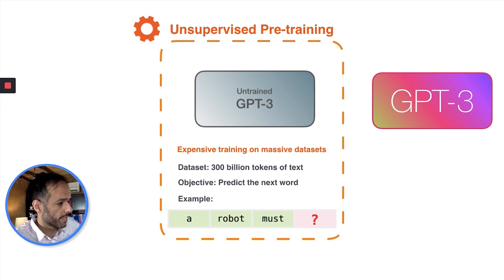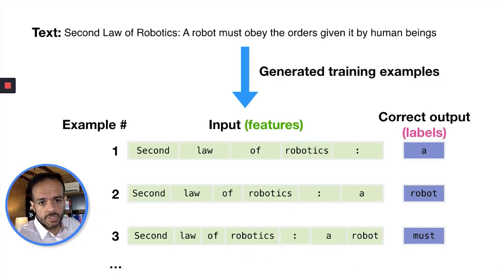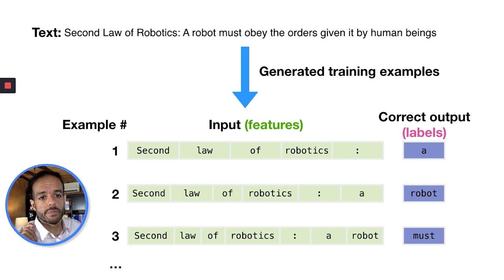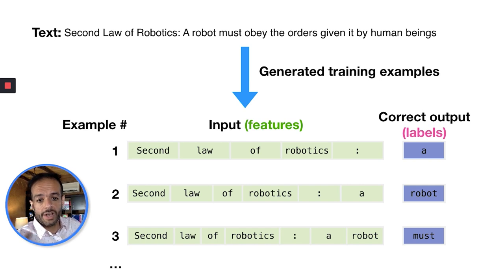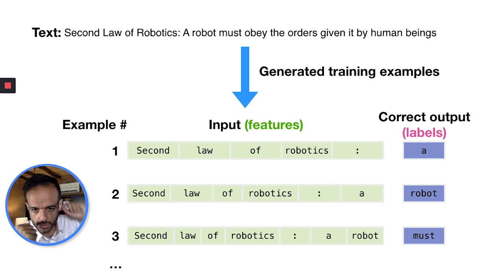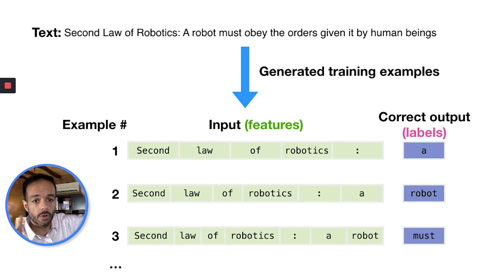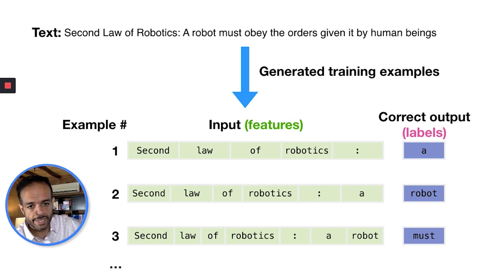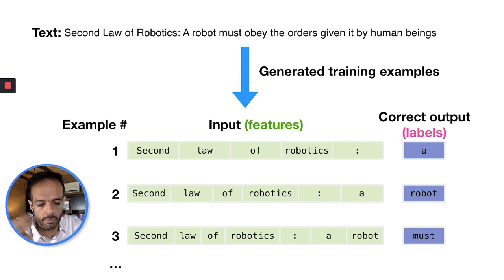So how do we generate training examples from text? Let's say we have the sentence: 'A robot must obey the orders given it by human beings.' We can generate multiple examples to train the model against. We take four or five words as input and say: generate the sixth word, which is 'a' in this case. Then we generate another example by giving six words and predicting the seventh word, and so on. Scraping the internet from forums, websites, and newspapers, you end up with a lot of text and can break it down to generate millions or even billions of training examples.